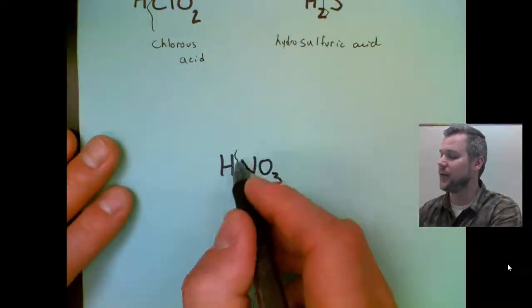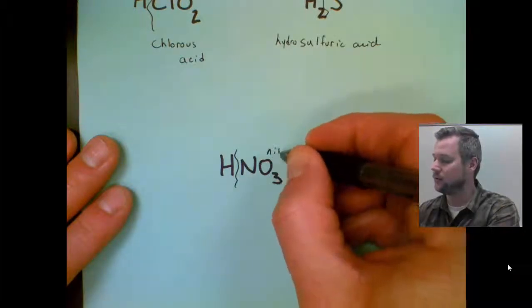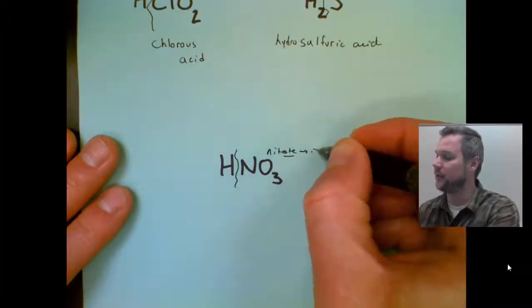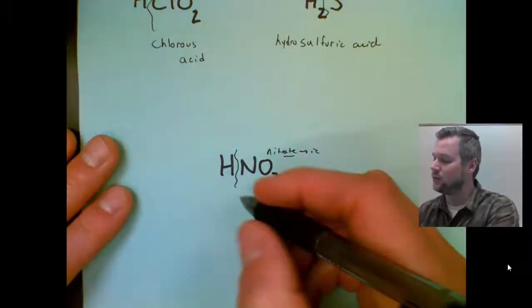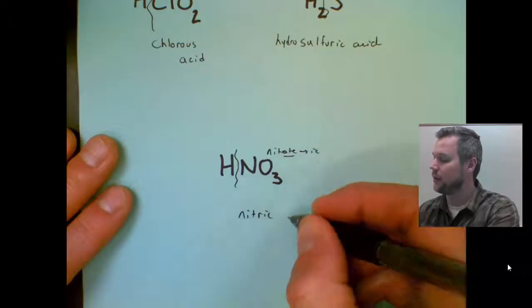Then HNO3, split after the hydrogen. NO3 is called nitrate. Eight turns to ic by itself. This one doesn't have the hydro. So replace the eight with ic, nitric, acid.